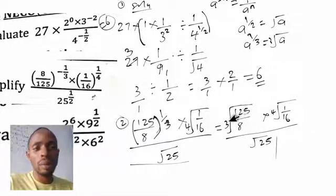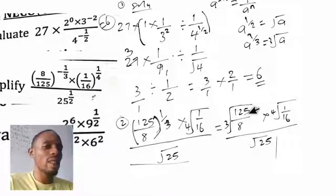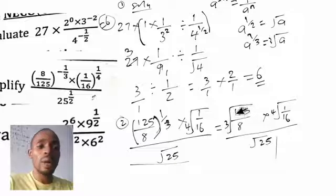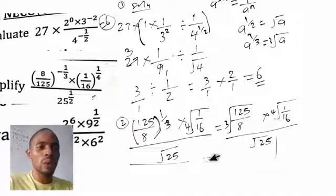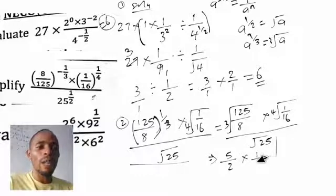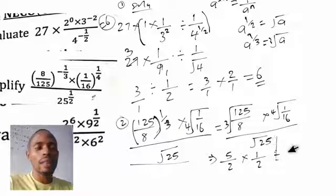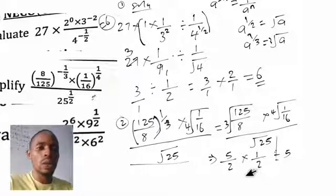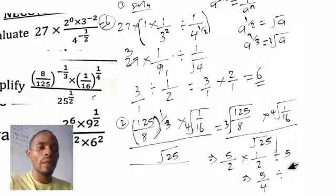Now let's compute each root. The cube root of 125 is 5 — that is 5 times 5 times 5. The cube root of 8 is 2. The fourth root of 1 is still 1. The fourth root of 16 is 2. And the square root of 25 is 5. So we have: 5 over 2 multiplied by 1 over 2, which gives us 5 over 4, and all of this divided by 5.